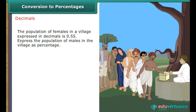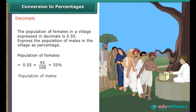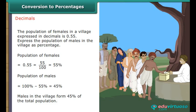Decimals: The population of females in a village expressed as a decimal is 0.55, which equals 55/100 = 55%. Therefore, the population of males forms 45% of the total population.